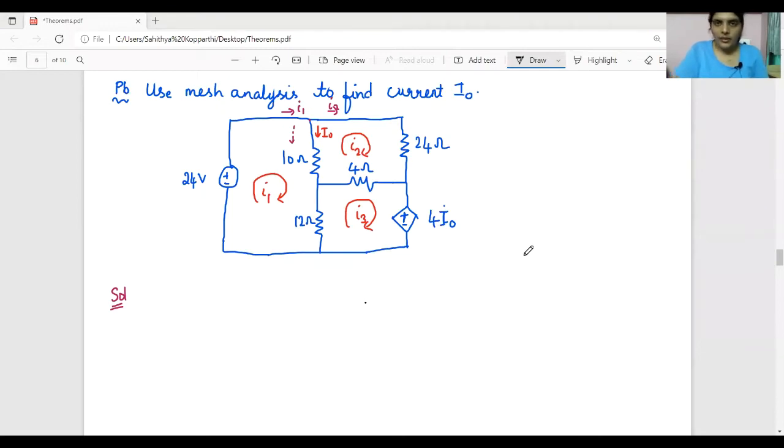Hello everyone, today's session is on mesh analysis with dependent sources. If you observe the circuit, there is one dependent source - it is a current controlled voltage source.